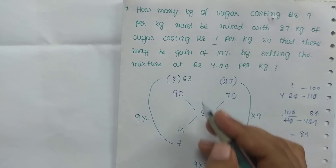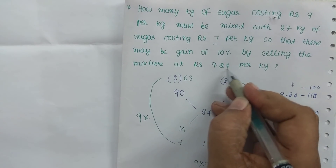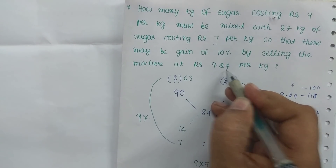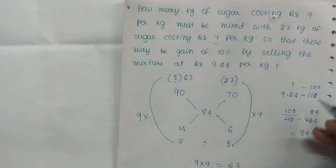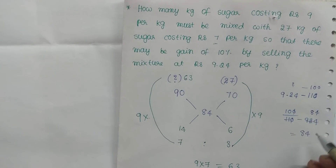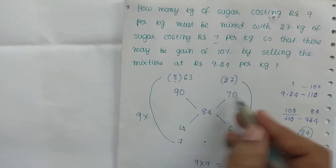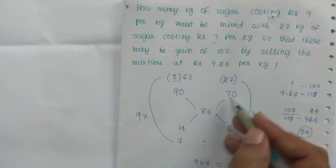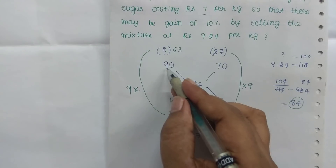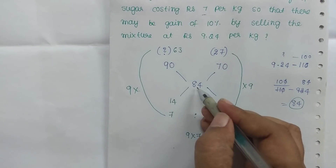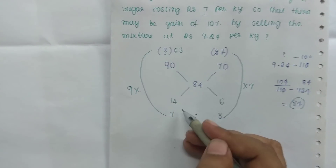So now we'll see that 9.25 is around 10% gain. So 84 — we have our convention: 90, 70, 84. So we have 84. This is the final answer.